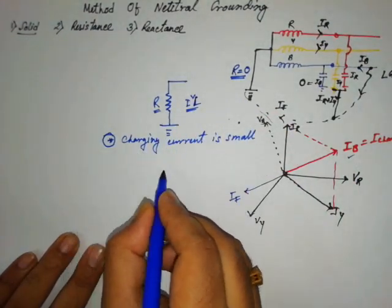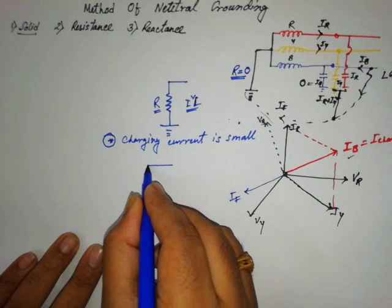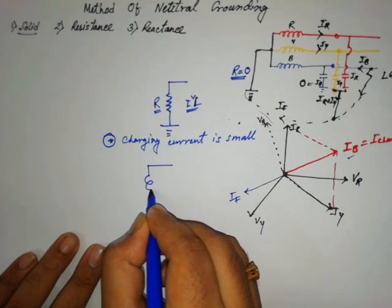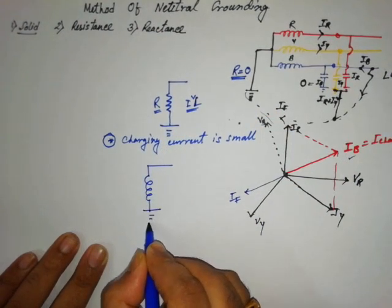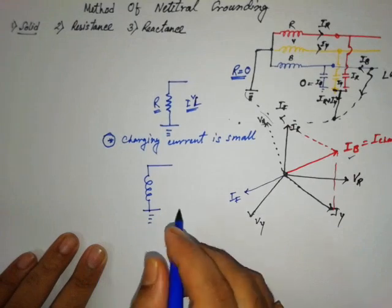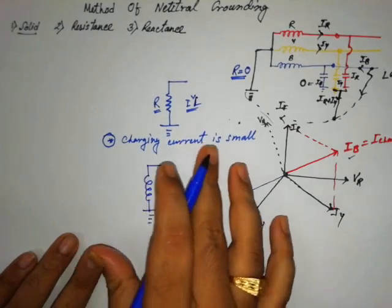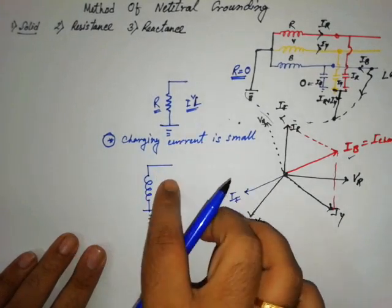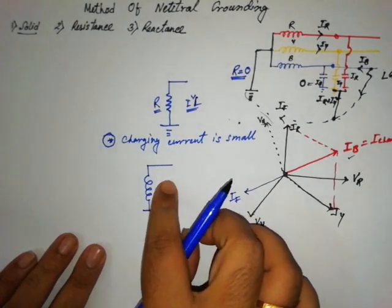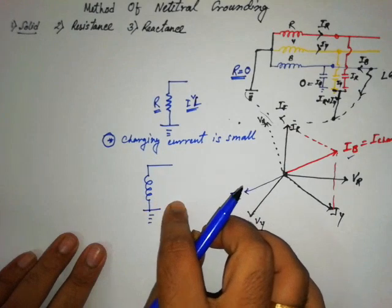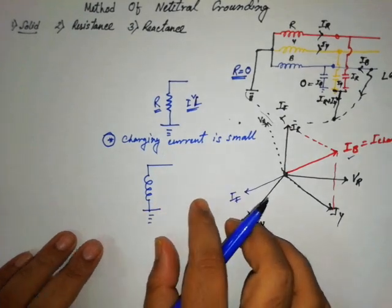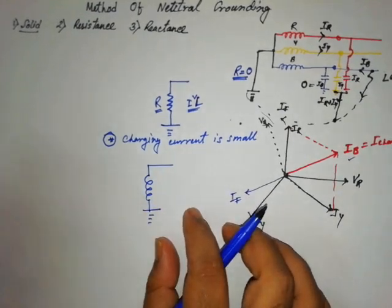We can also use an inductance there. The purpose is the same — just like a current limiting reactor — the purpose of using an inductor is the same as resistance.